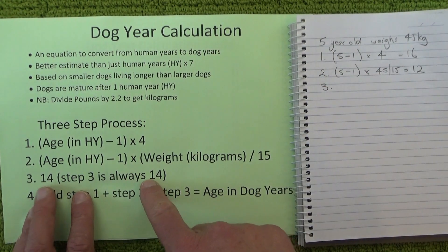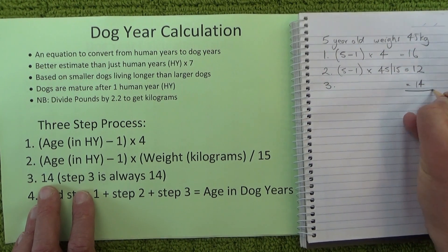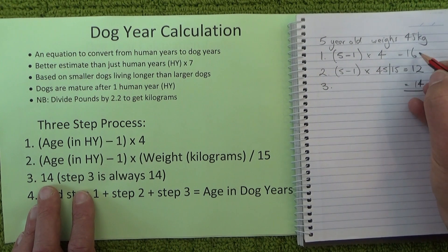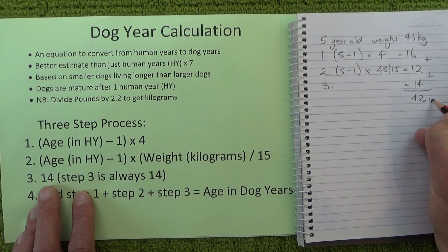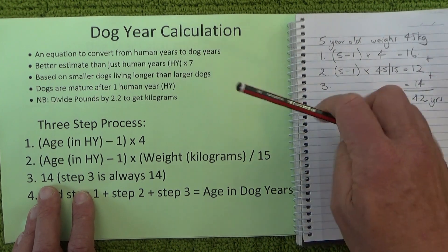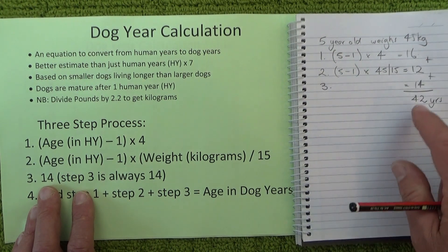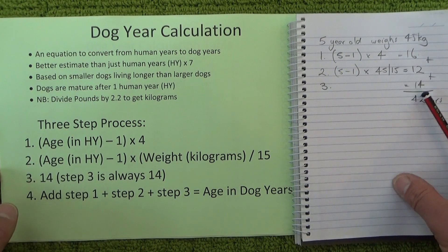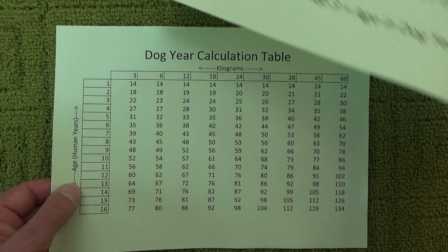Step three is the easiest step because step three is always equal to 14. So add those three numbers together: 16 plus 12 plus 14, and that gives us 42 dog years. So a five-year-old dog weighing 45 kilos is the equivalent of a human at 42 years of age.